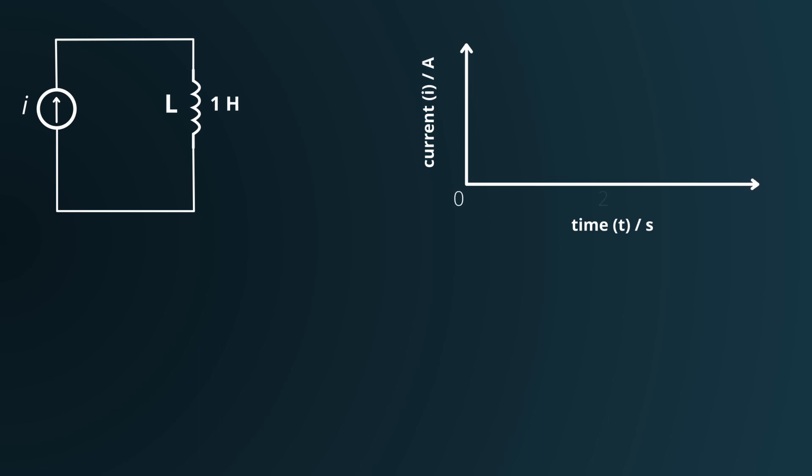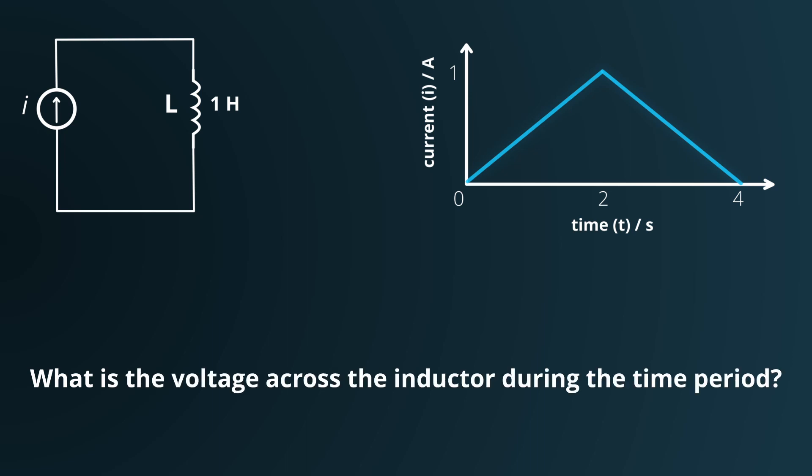Over the next 2 seconds, it linearly rises to reach 1 amp at T equals 2 seconds. Following that peak, it linearly declines back to 0 amps by T equals 4 seconds. Our challenge now is to determine the voltage across the inductor throughout this 4 second interval.